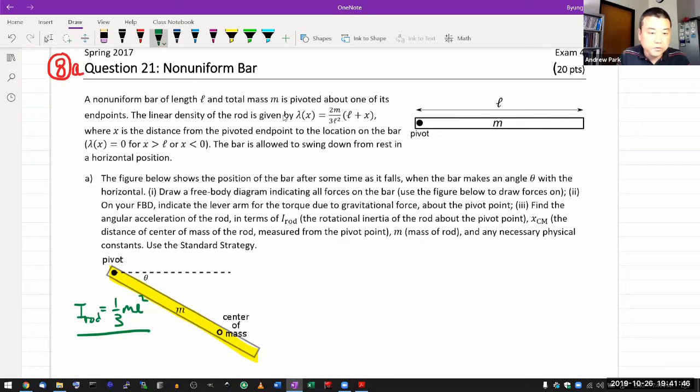So I do want you to focus first on conservation of energy and momentum questions. This is kind of the last bit that you would cover if you feel comfortable with all the other topics. So it says, non-uniform bar, we won't worry about that part. Once again, we won't worry about the part where x is the distance from the pivoted endpoint.